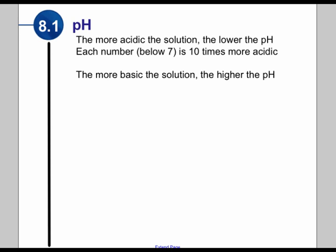Now, if we're looking at how basic a solution is, that's a higher pH. So the higher number is more basic, the lower number is more acidic. And again, each number above 7 is 10 times more basic.